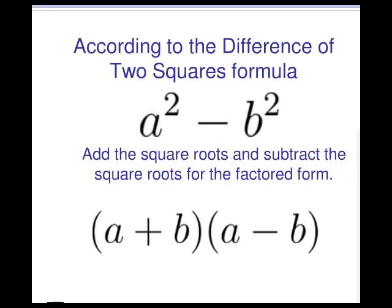According to the difference of two squares formula a squared minus b squared, we will add the square roots and subtract the square roots for the factored form.